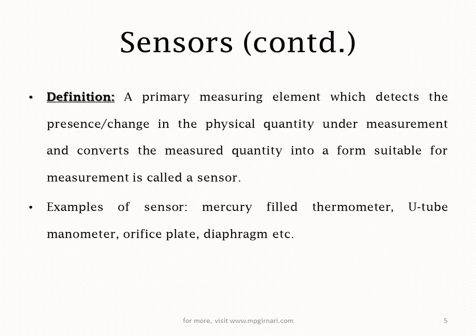Example: mercury filled thermometer mein mercury jo hai woh capillary mein upar badhegi — that means it is expanding in volume. So yahan par input temperature hai aur output kya hai — volume. Same way, manometer mein input is pressure and output is movement of the manometric liquid, that is displacement. Toh sensor mein jo bhi input-output quantity hai woh kuch bhi ho sakti hai.